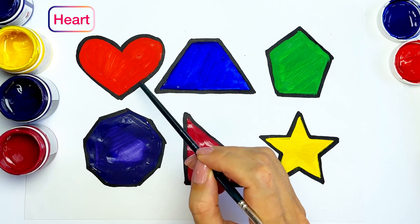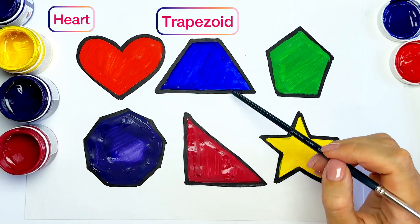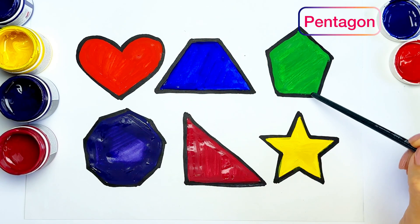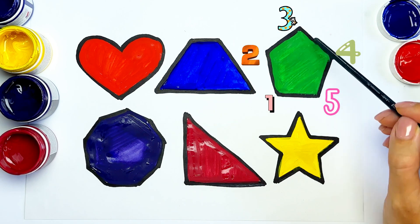So, we have light red heart, blue trapezoid, green pentagon with five angles. One, two, three, four.